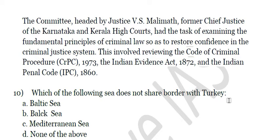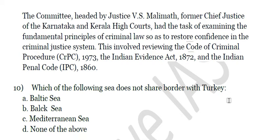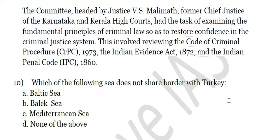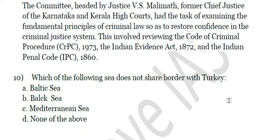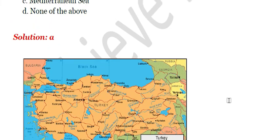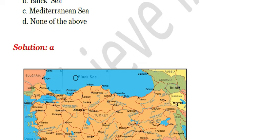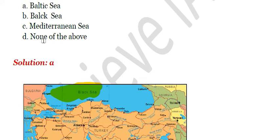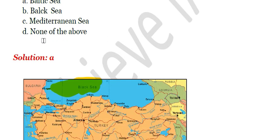The last question is: which of the following seas does not share a border with Turkey? A. Baltic Sea, B. Black Sea, C. Mediterranean Sea, D. None of the above. The answer is A, Baltic Sea. The Baltic Sea is near the Northern Hemisphere and does not border Turkey. Turkey does border the Black Sea and the Mediterranean Sea, as can be seen on the map.